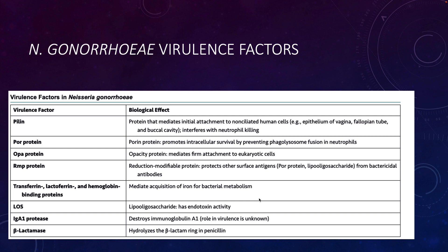The first member of the Neisseria genus we'll discuss is Neisseria gonorrhoeae, the causative agent of the sexually transmitted infection gonorrhea. There are a number of virulence factors that allow it to cause disease. Neisseria gonorrhoeae can use a pilin protein for initial attachment to non-ciliated human cells, including the epithelium, fallopian tube, and buccal cavity. This protein also helps interfere with killing by neutrophils.